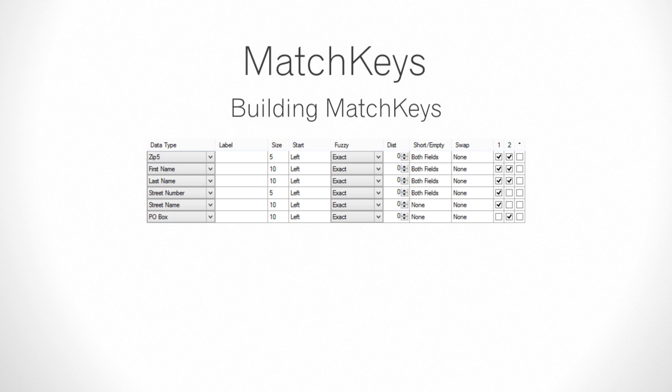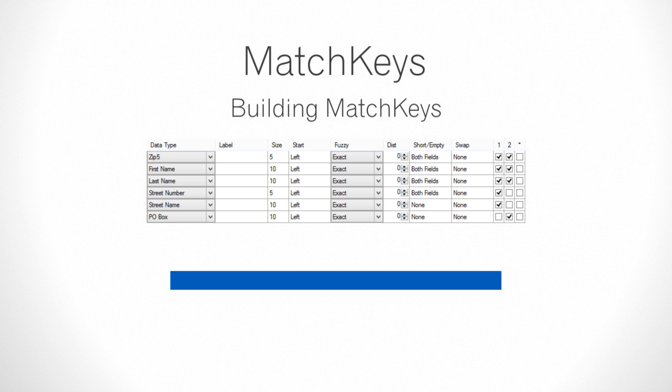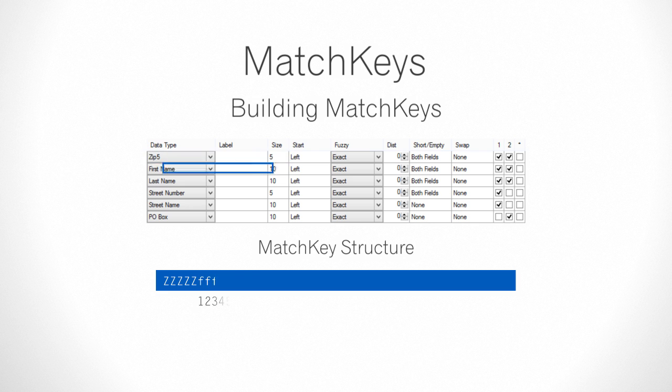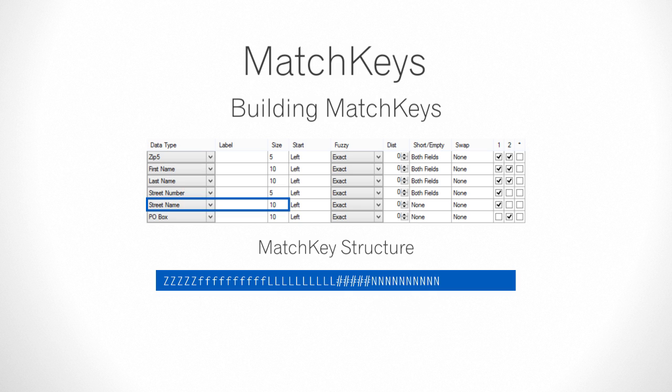Building Match Keys. Before we discuss how the combinations are applied, I'll show how Matchup uses only the relevant data to compare the records. For each record, Matchup builds a match key based on each of the specified match code components and their settings. It will be a small representation of the actual record. The match key structure from this match code includes: the first five characters from zip 5, the first ten characters from first name, the first ten from last name, the first five from street number, the first ten from street name, and the first ten from P.O. Box.